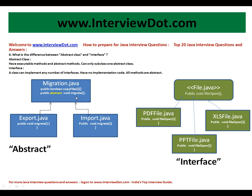There is a different implementation that should be provided by export and import. For that, we made the migrate method abstract — meaning only the signature is present, and the implementation must be given by the extending classes. Export.java will give its own implementation for the migrate abstract method, and import.java will give its own implementation. This is called encapsulation. If in future one more class comes into picture, it will give its own implementation. It's like a common interface given to the client, with implementations provided by the subclasses — adaptable in the future.